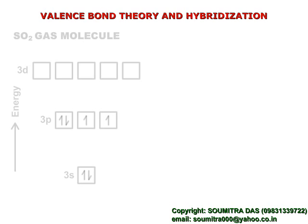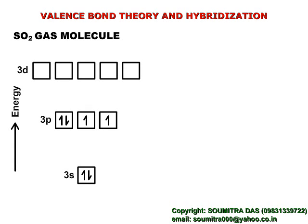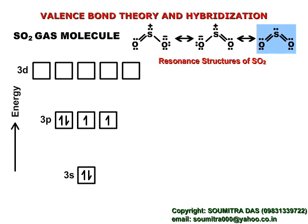Now let's see what happens in the case of SO₂ gas molecule. Here the central atom is again sulfur. We will consider the bonding scheme of the major contributor, that is the most stable resonance structure of SO₂. That is this one.